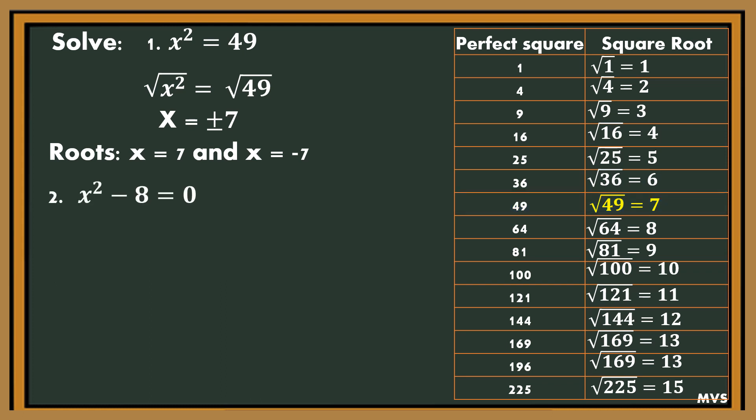Next: x squared minus 8 equals 0. First, transpose negative 8 to the right side of the equation, so it will become positive 8. We will have x squared equals 8. Get the square root of both sides. We will have the square root of x squared equals the square root of 8. The square root of x squared is x.